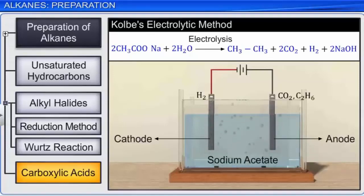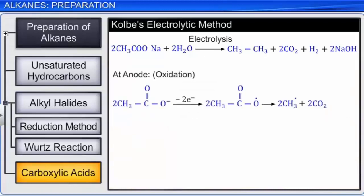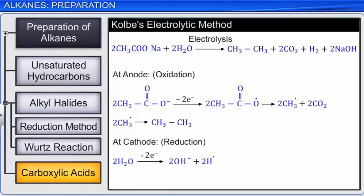The mechanism of the Kolbe electrolytic reaction can be understood through the following steps. At the anode, the acetate ions in the solution lose electrons and form acetate free radicals. The acetate free radicals lose a carbon dioxide molecule and thus form methyl free radicals. The methyl free radicals further react and form ethane gas. At the cathode, water molecules accept the electrons and split up into hydroxyl ions and hydrogen free radicals. Two such hydrogen free radicals combine together and form hydrogen gas. Thus, in the Kolbe electrolysis method, alkane is produced at the anode.